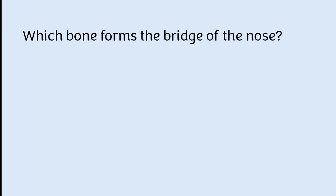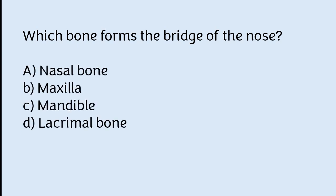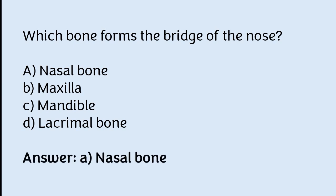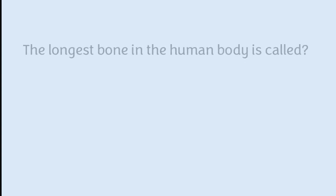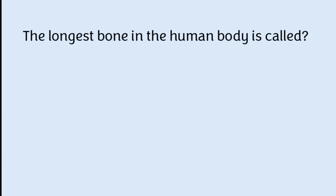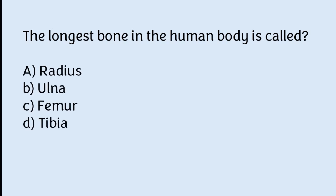Which bone forms the bridge of the nose? Nasal bone, maxilla, mandible, or lacrimal bone. The correct answer is option A — the nasal bone forms the bridge of the nose. The longest bone in the human body is called: radius, ulna, femur, or tibia. The correct answer is option C — the longest bone in the human body is the femur.